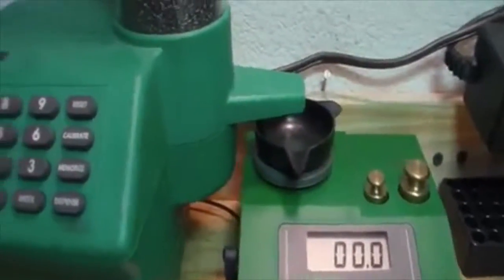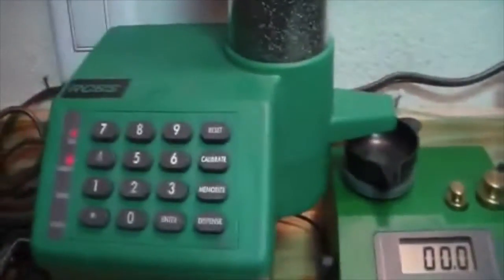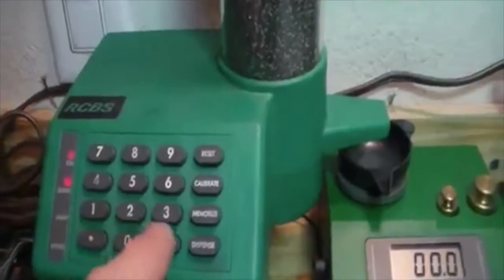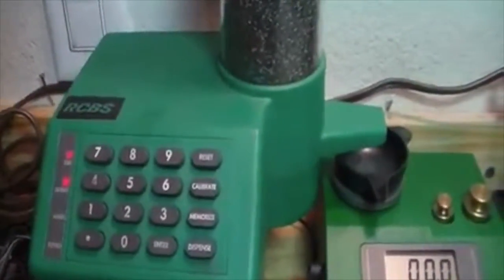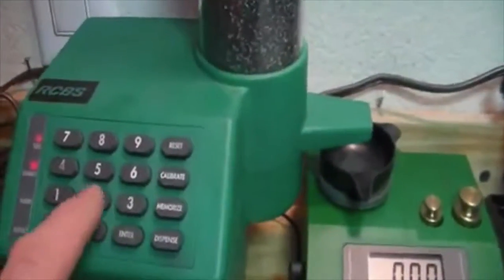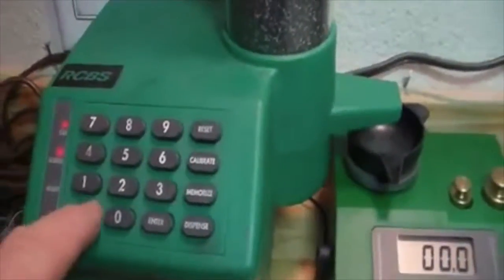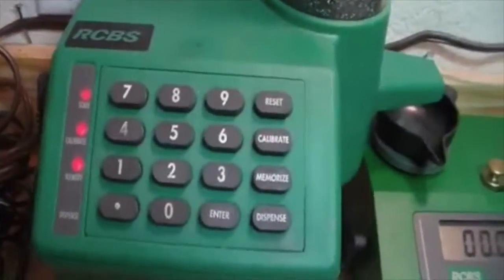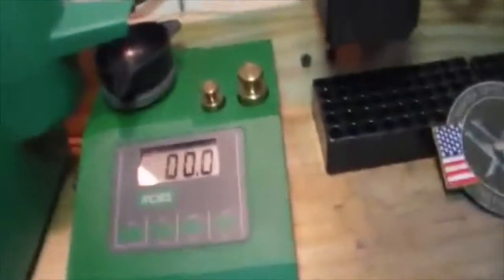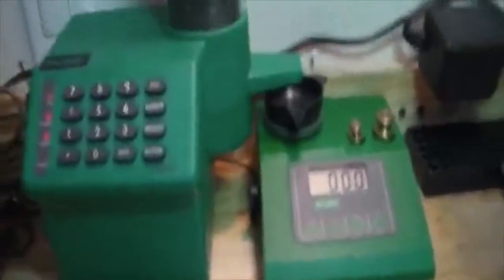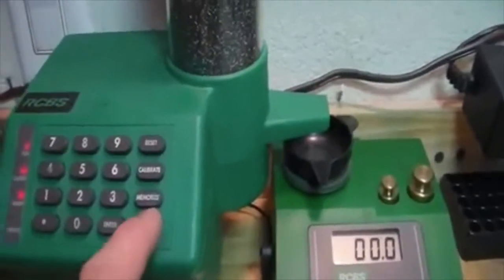And what we've got to do now is we need to set our charge. In this case it's going to be 24 grains. So, two-four-point-zero, enter. Two-four-point-zero, enter. There we go, I was a little bit too fast. I didn't wait for that memory button to come on. Make sure that nothing came out. Okay, nothing came out. This is like real life reloading here. So now I hit 'dispense'.